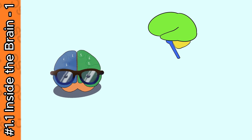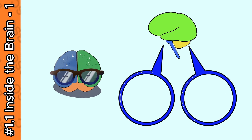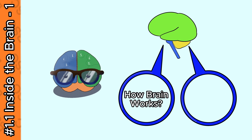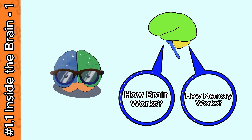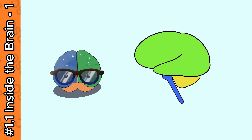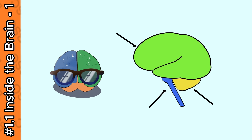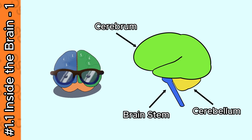What we know so far — we can divide the understanding of the human brain into two parts, where one discusses how the brain works and the other discusses how our memory works. The exploration of the human brain begins when we look inside it. The first thing we see is three parts of the brain called the cerebrum, cerebellum, and brain stem.